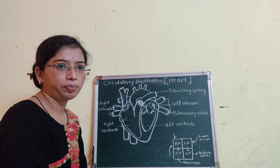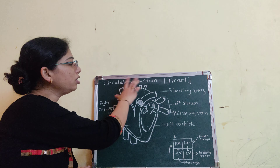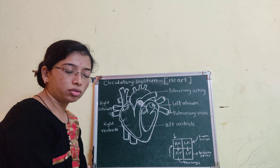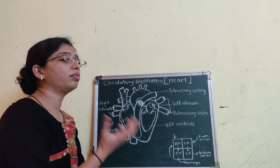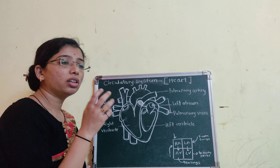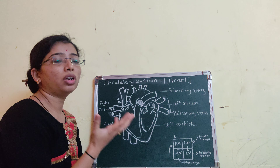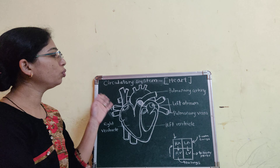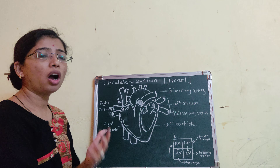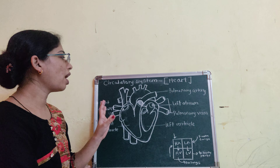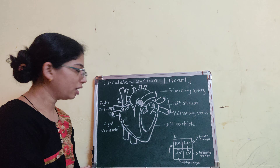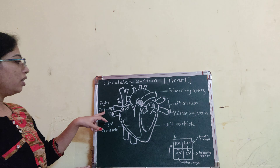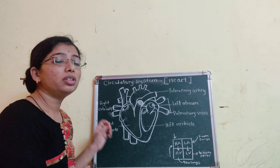The heart has four chambers: the right atrium, left atrium, right ventricle, and left ventricle. Both compartments are separated by a wall known as the septum. The heart is made up of muscular cardiac muscles, and due to their contraction and relaxation, the heart continuously beats and pumps.